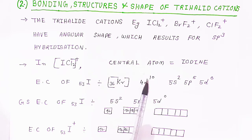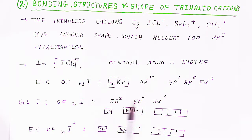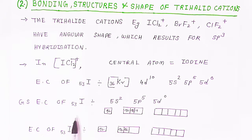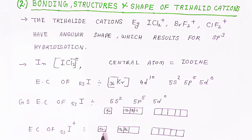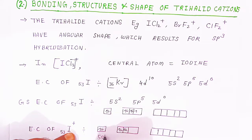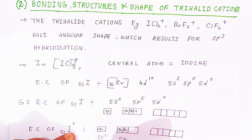Since we are talking about a cation, iodine will lose one electron. The electronic configuration of I⁺ will be 5s², 5p⁴ only — 5p⁵ loses one electron to become 5p⁴.